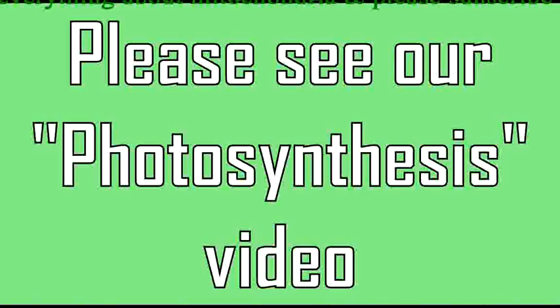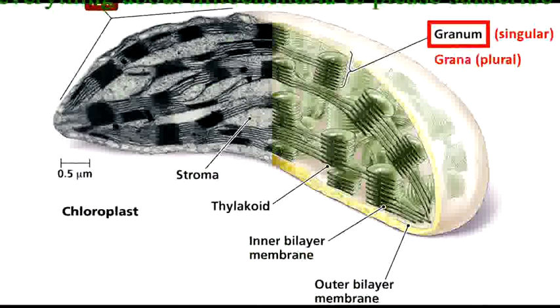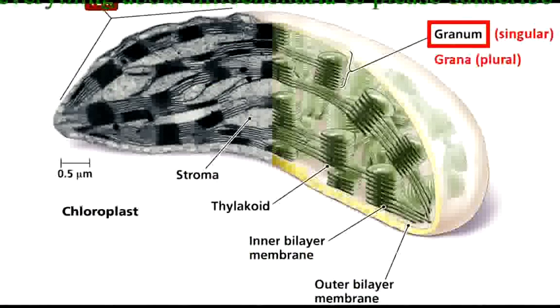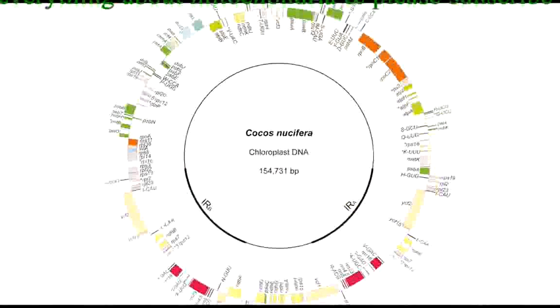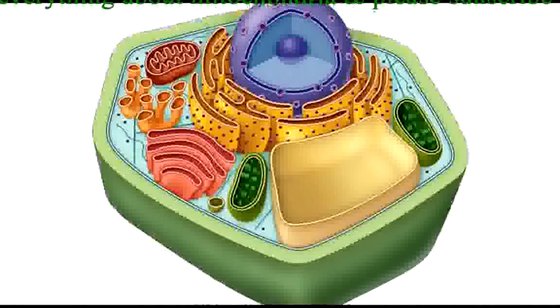Thylakoids are arranged in stacks called grana. The stroma is like the mitochondrial matrix and contains enzymes and multiple copies of the chloroplast genome. Most chloroplast proteins, however, are encoded by the nuclear genome.